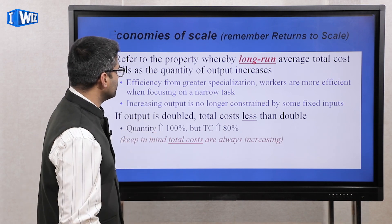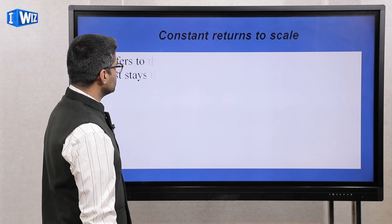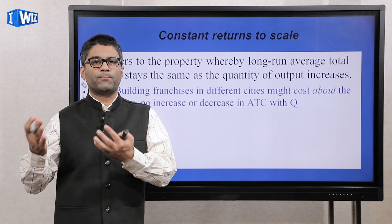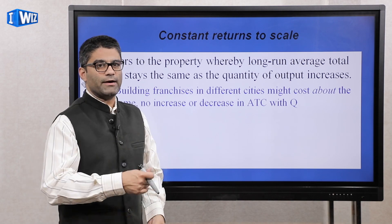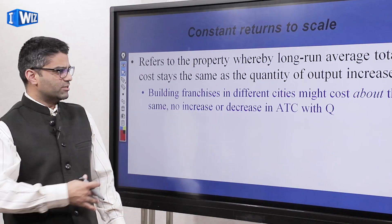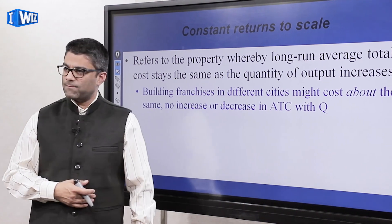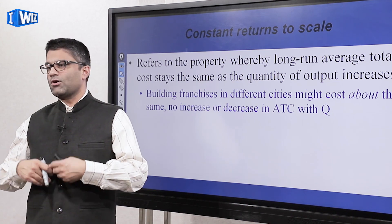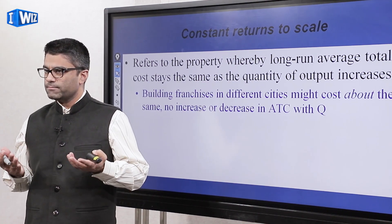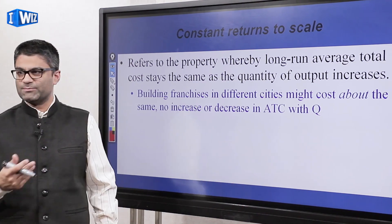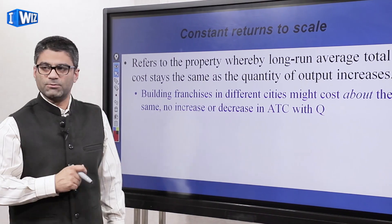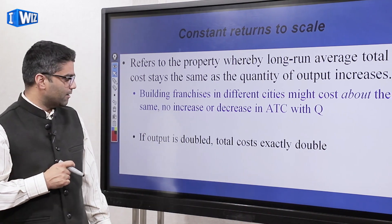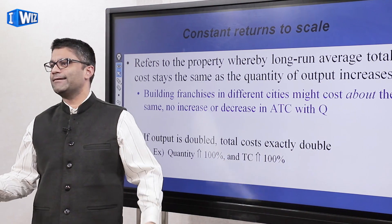If you understand economies of scale, the other two are fairly simple. Constant returns to scale means that if you increase output, your costs rise by the same proportion. Each extra worker you hire is equally productive as the previous one. A good example is opening franchises in different cities — the cost rises by roughly the same amount each time. Franchises are usually subject to constant returns to scale, so if you want to double your output, your costs exactly double.